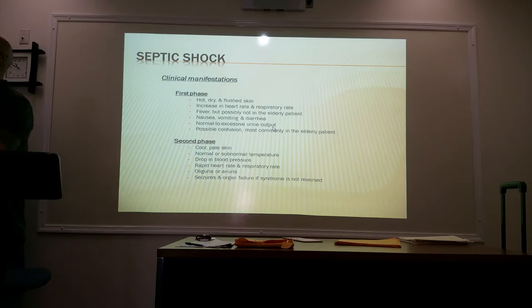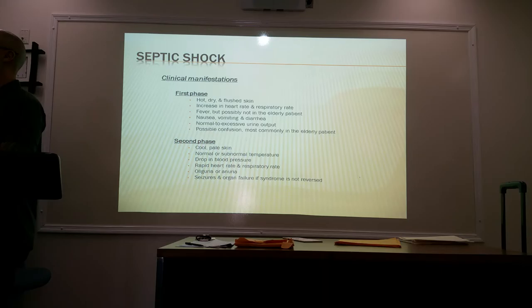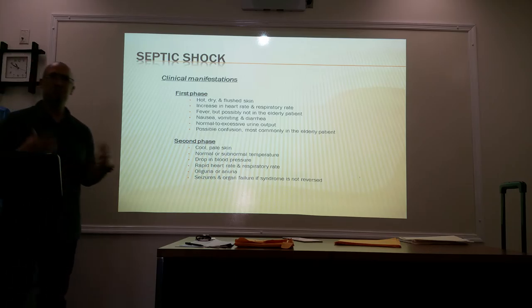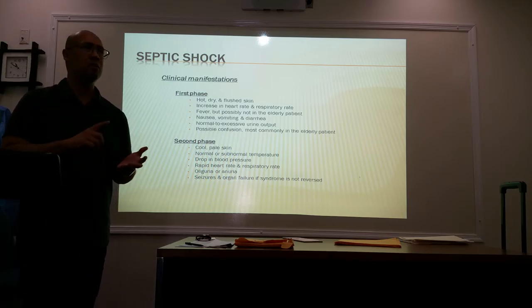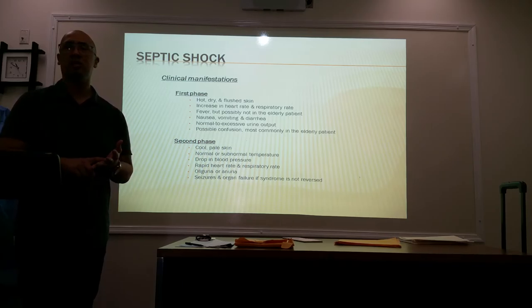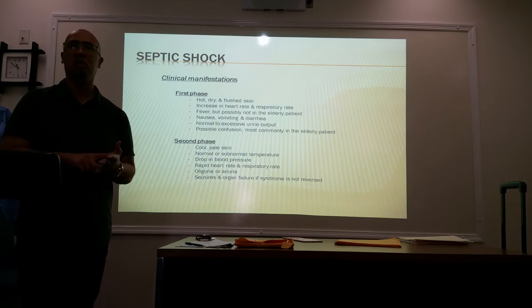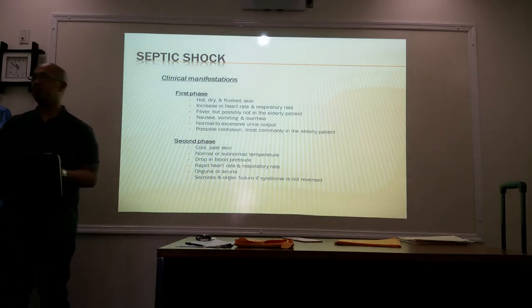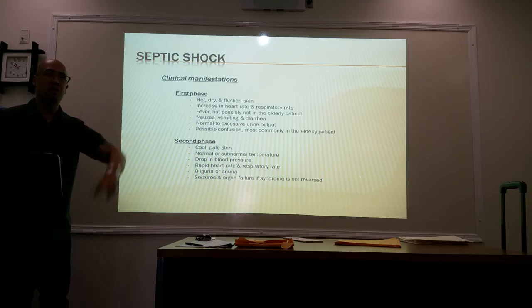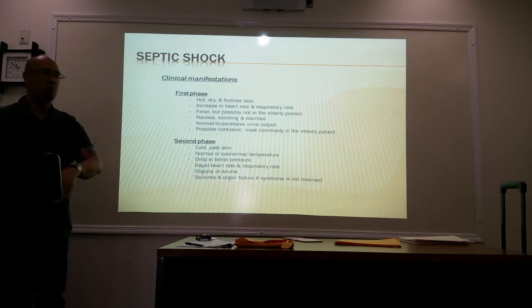The clinical manifestations of septic shock: in the first phase you may experience hot, dry, flushed skin; elevated heart rate; increased respiration; fever (possibly absent in the elderly); nausea, vomiting, and diarrhea; normal to excessive urine output; and possible confusion, most common in the elderly. In the first phase, blood pressure may appear normal, but there can be increased respiration, changes in level of consciousness, and changes in urine output. As it progresses, respiration increases, heart rate drops, urine output drops, and blood pressure drops.